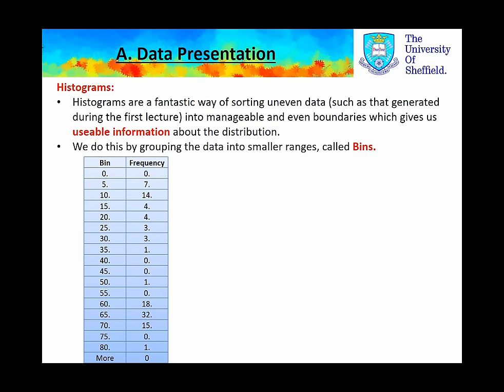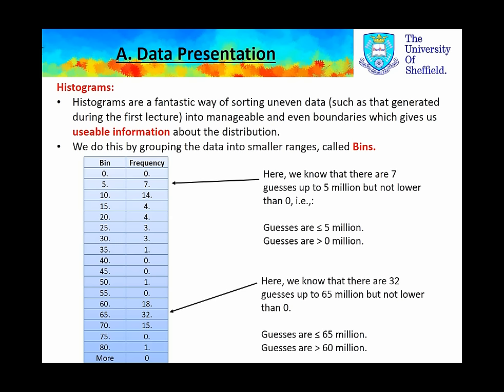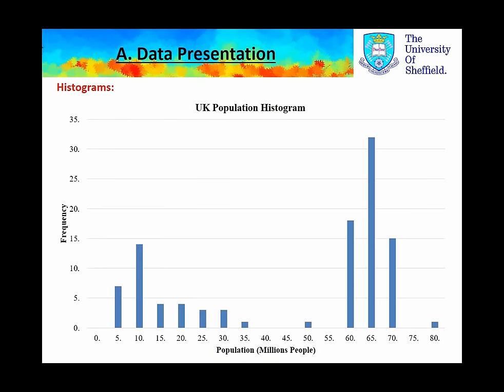Here we have the example of UK population data used in the lecture. We know that there are seven guesses up to 5 million, but not lower than zero. And similarly, we know that there are 32 guesses up to 65 million, but not lower than 60 million. Here is an example of this histogram created from the data set. Please note the important labelling of axis labels correctly — we have frequency on the y-axis and population on the x-axis in millions of people.